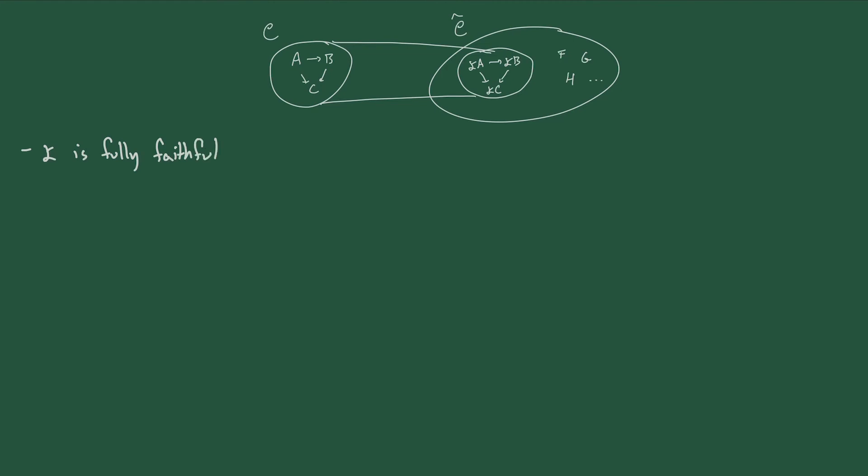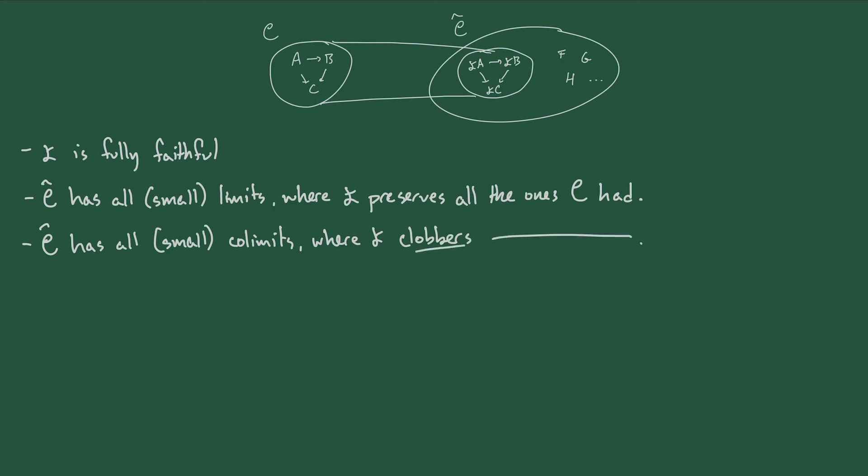So first of all, any question we could possibly have about C can be answered by looking in C hat, as long as we know what the representable objects are. But we're just getting started. The C hat has all small limits. That means it has a terminal object, products, pullbacks, where the Yoneda embedding preserves all the limits that C had. C hat also has all small colimits. These are things like the initial object and coproducts and pushouts. And in this case, the Yoneda embedding clobbers all the colimits that C had. Now at the start of this video, I defined presheaves as functors on small categories. And that was exactly to ensure that C hat has all small limits and small colimits. This last one is actually the universal property of the category of presheaves. We say that C hat is the free co-completion of C.